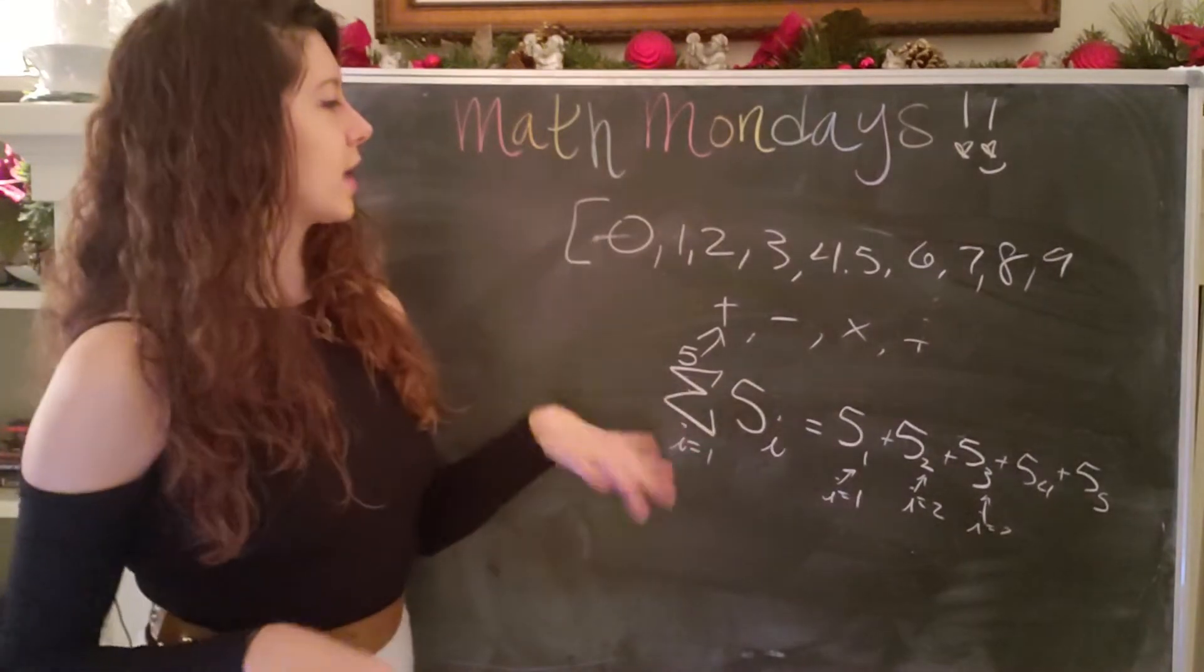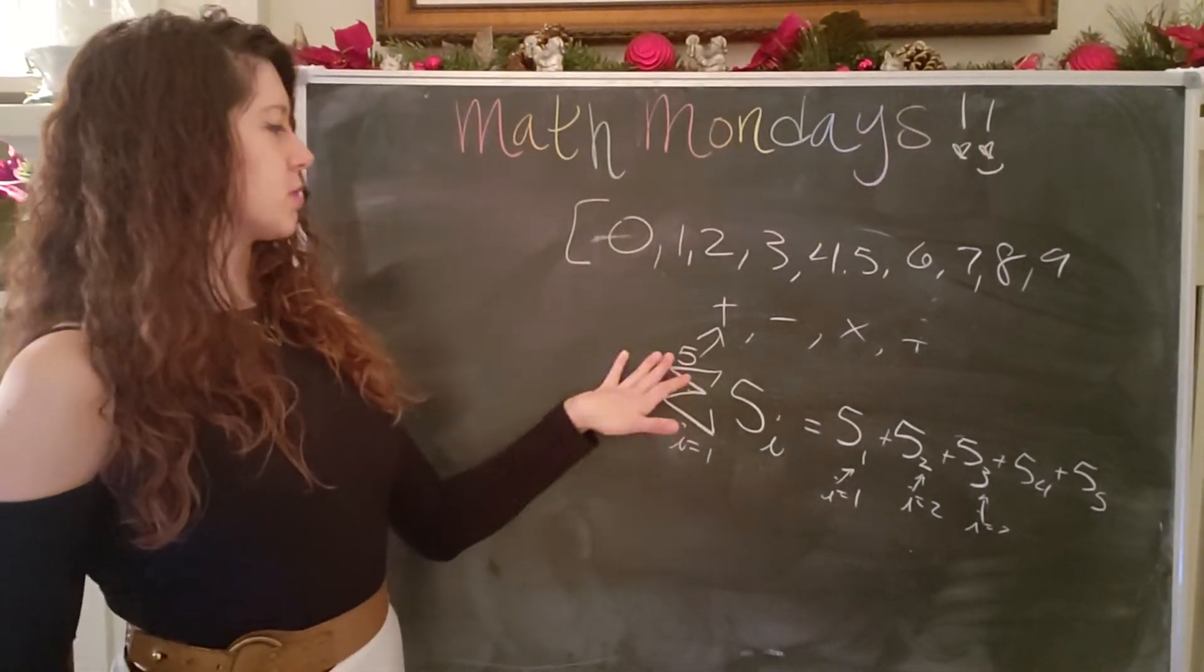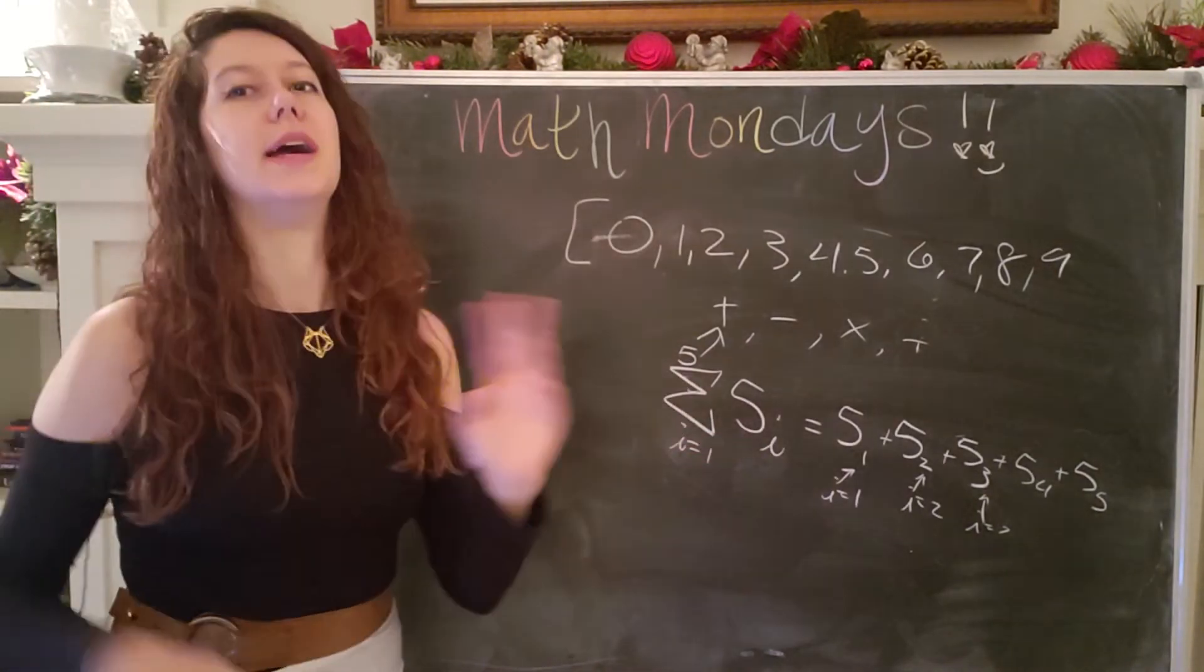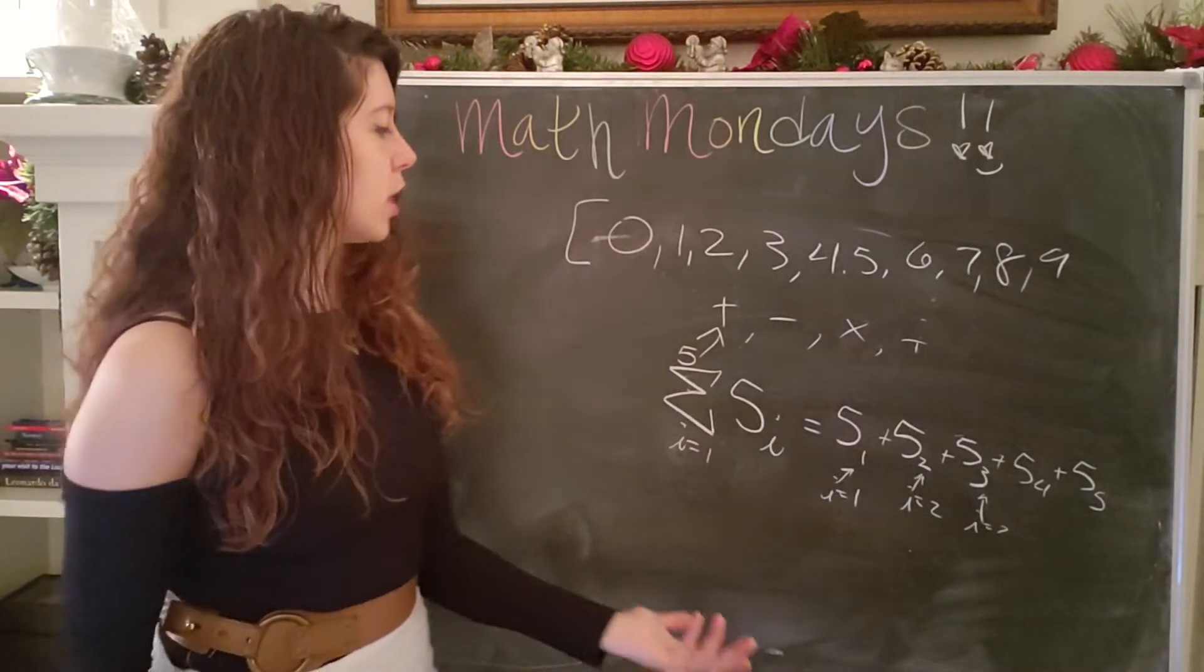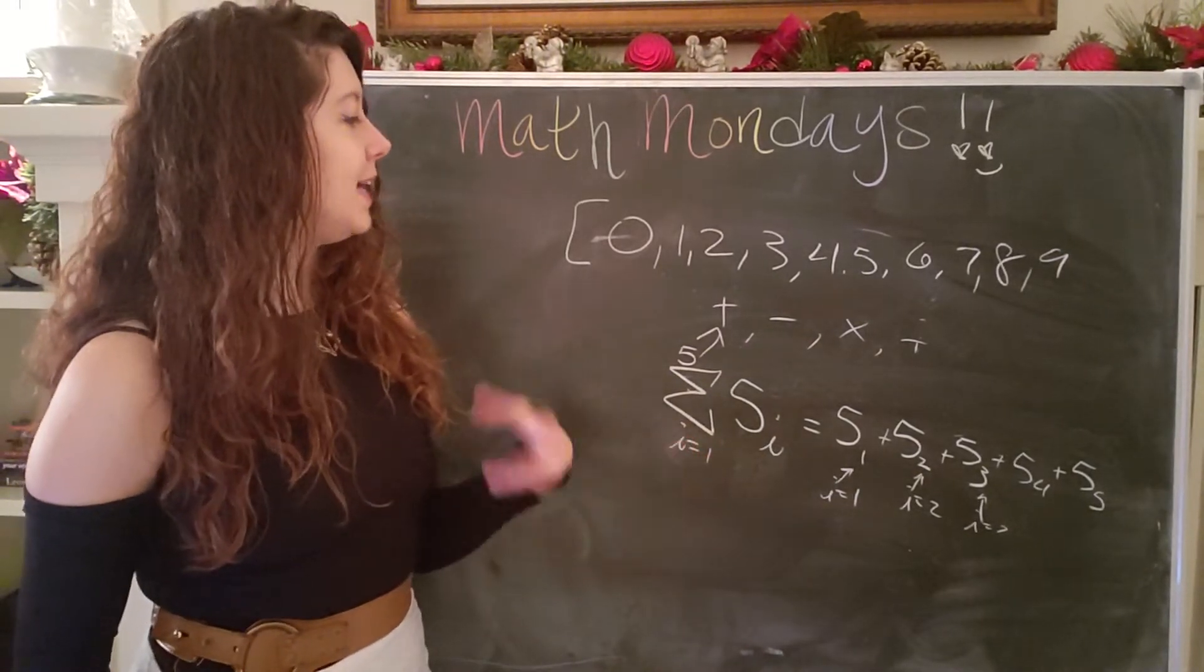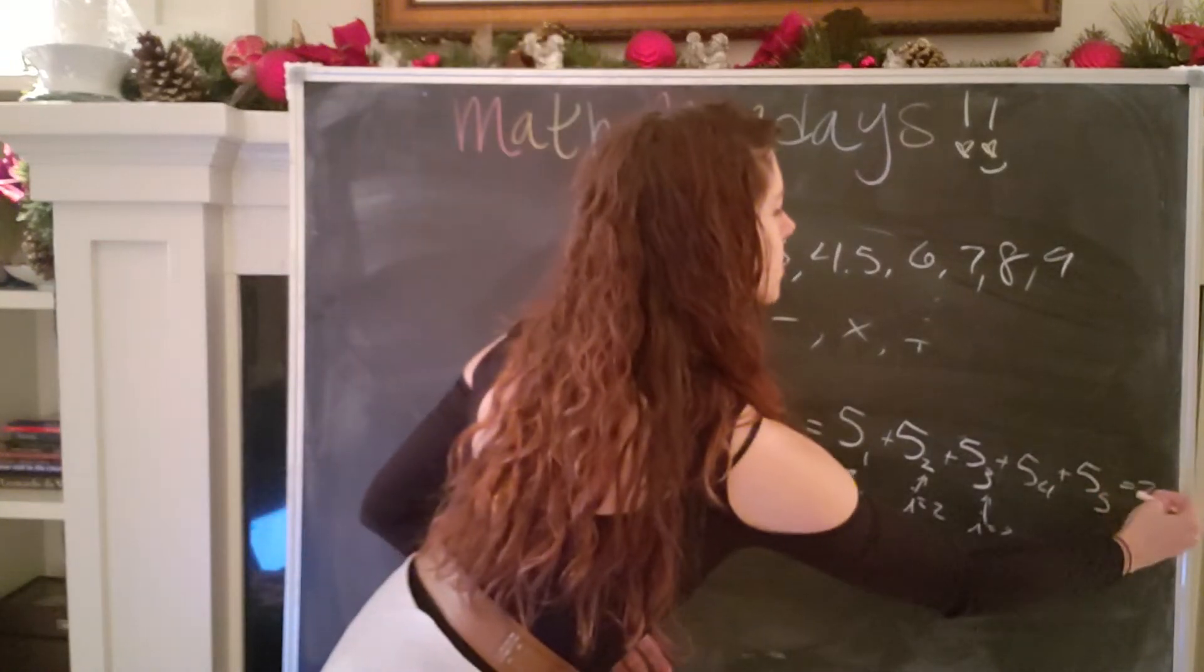For those of you who program, you'll recognize this as our friend, the for loop. So for i equals one to five, just add five each time. We're adding one to i every time we go. So i can only be integers or whole numbers. And this just equals 25.